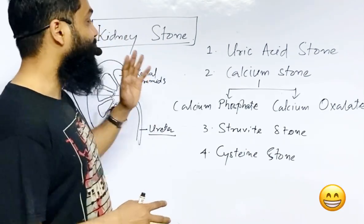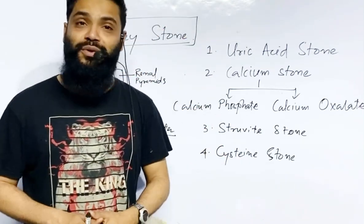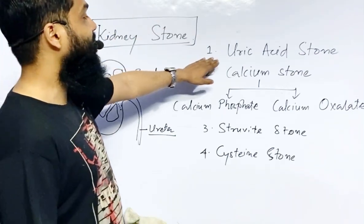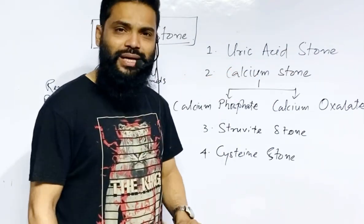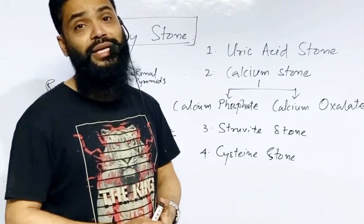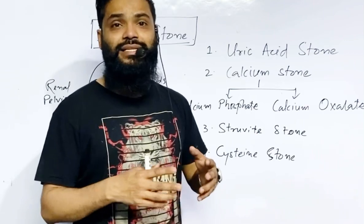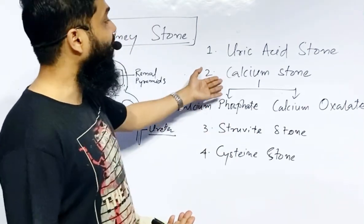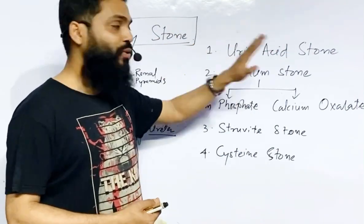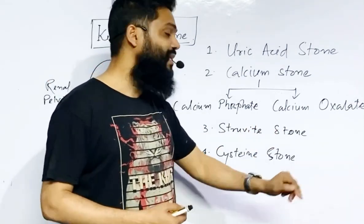We can have basically four types of kidney stones, and all these four types have different reasons. We'll start talking about the first one — the uric acid stone. This is not the most common kind; it is the second most common. The most common one is the calcium stone, which we'll cover after uric acid stone, and then struvite stone and cystine stone.